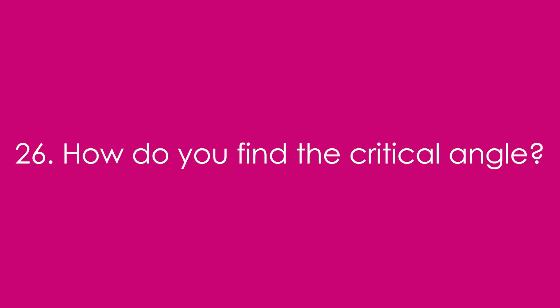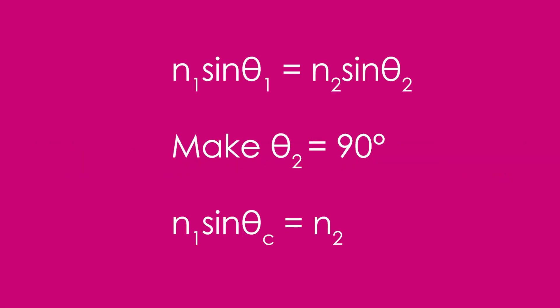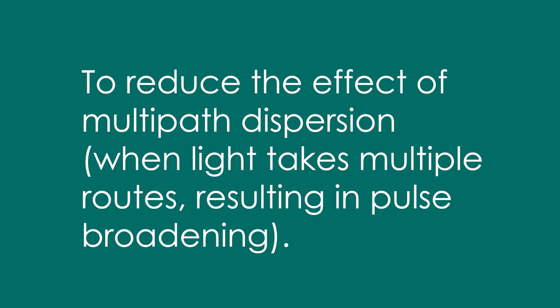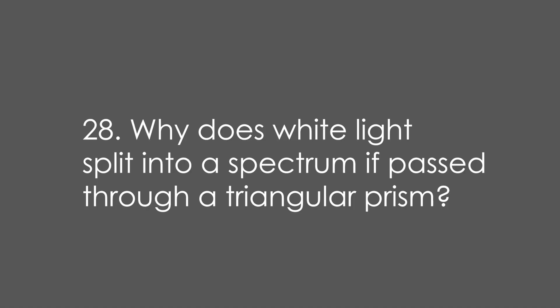26. How do you find the critical angle? Taking Snell's law, we make theta 2 equal to 90 degrees, so sine theta is equal to one, and we solve for theta 1, which we call theta C — the critical angle. 27. Why do optic fibres need to be thin? It's to reduce the effect of multipath dispersion, that's when light takes multiple routes resulting in pulse broadening because the light rays take different times to reach the end.